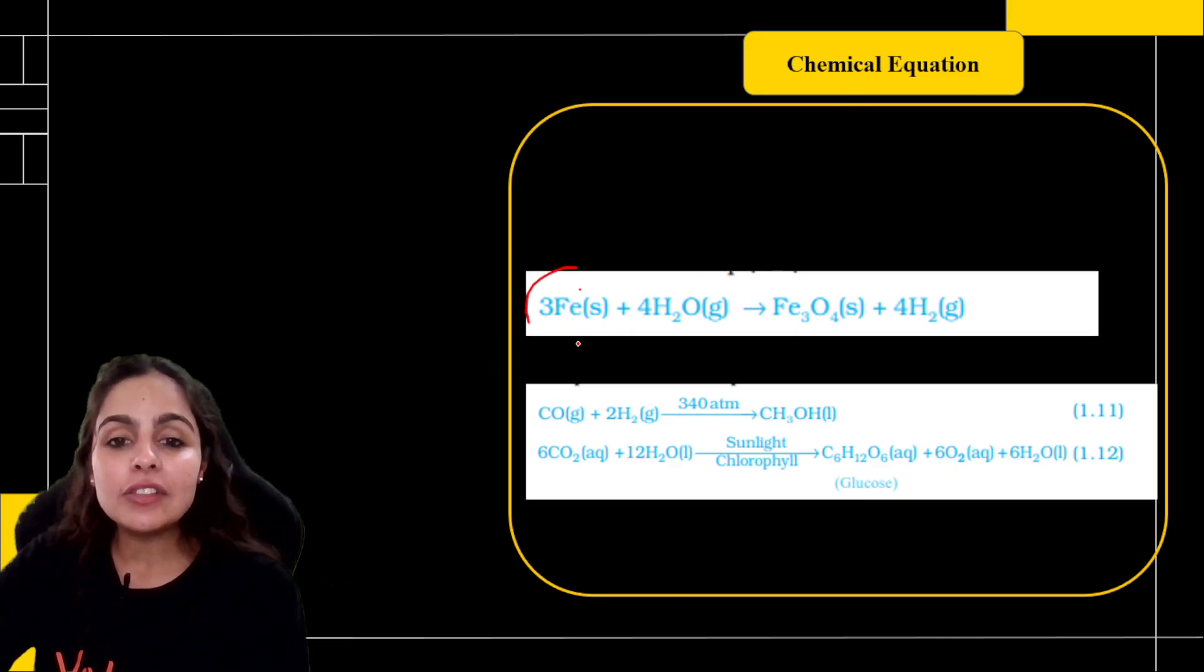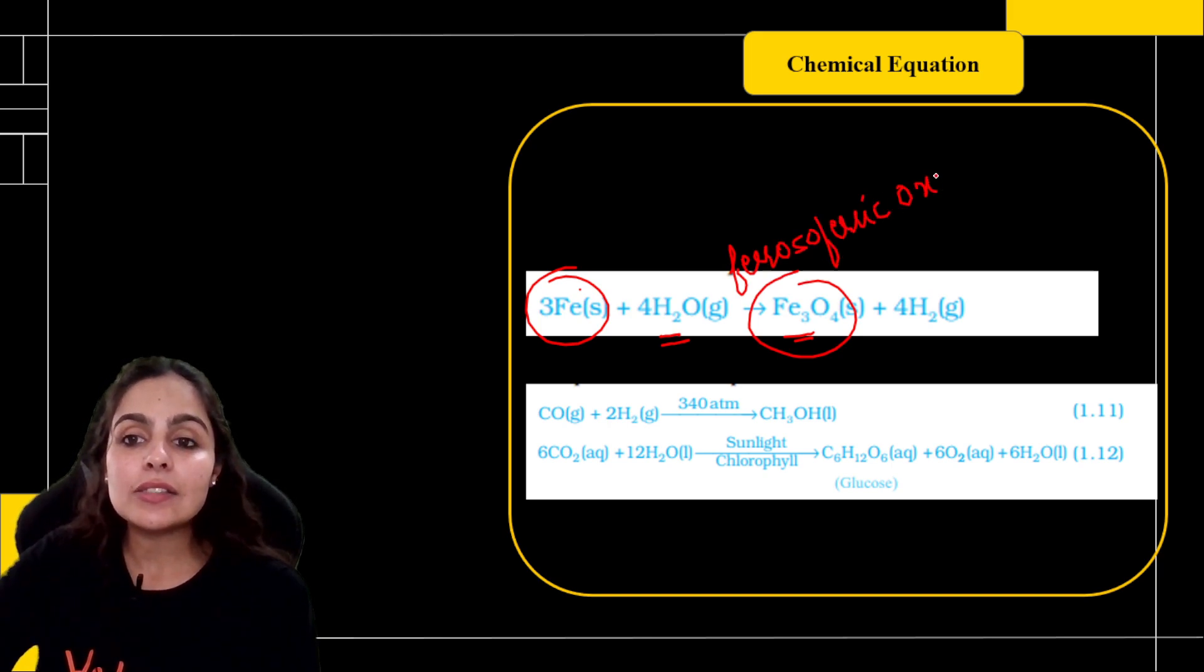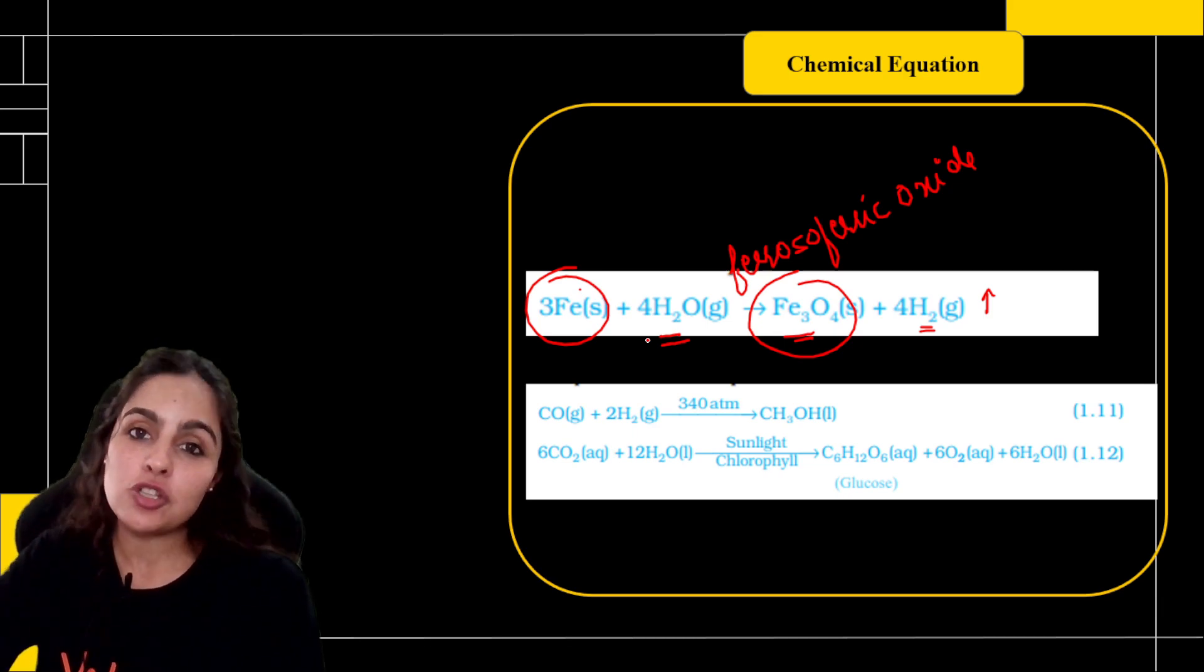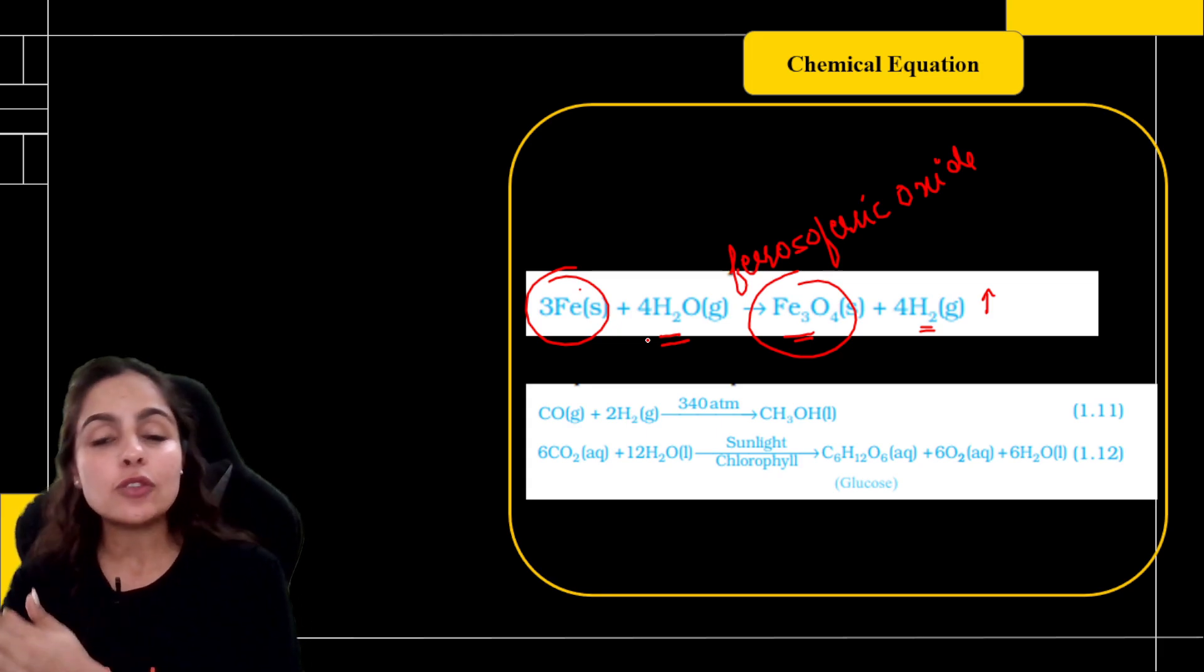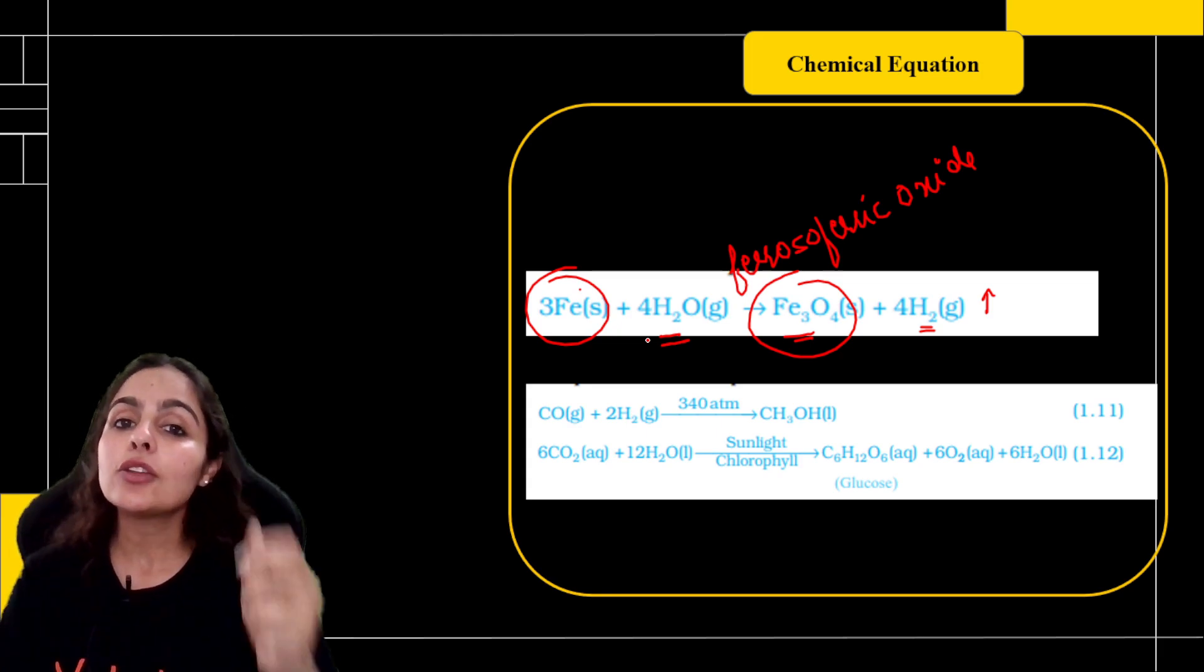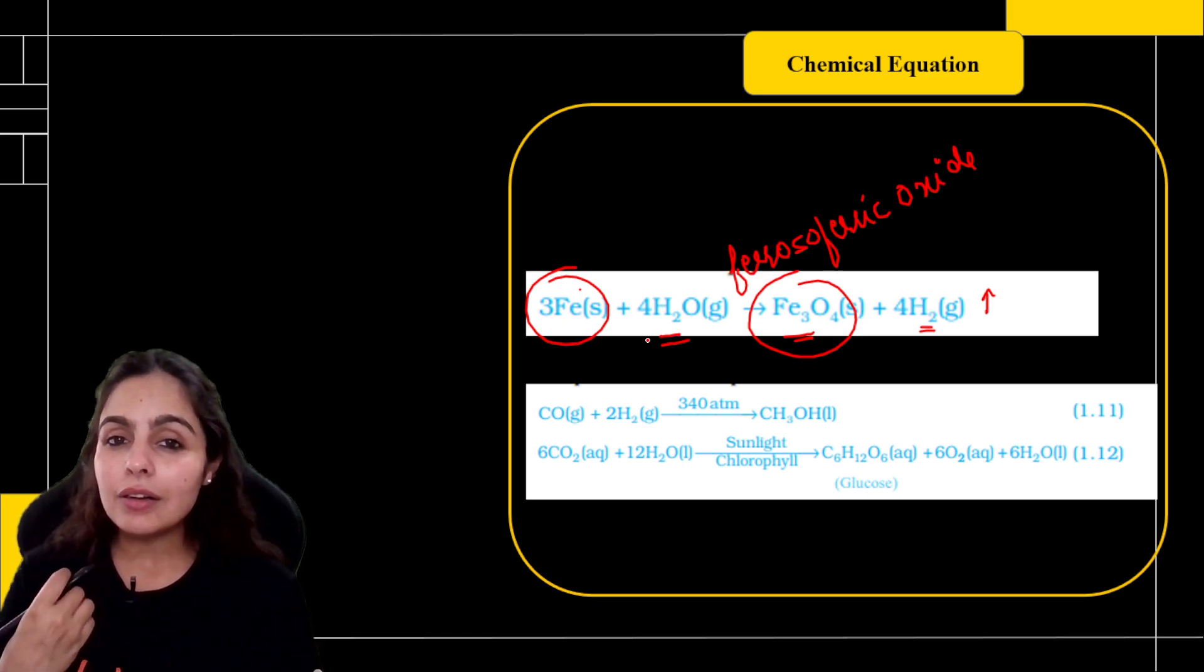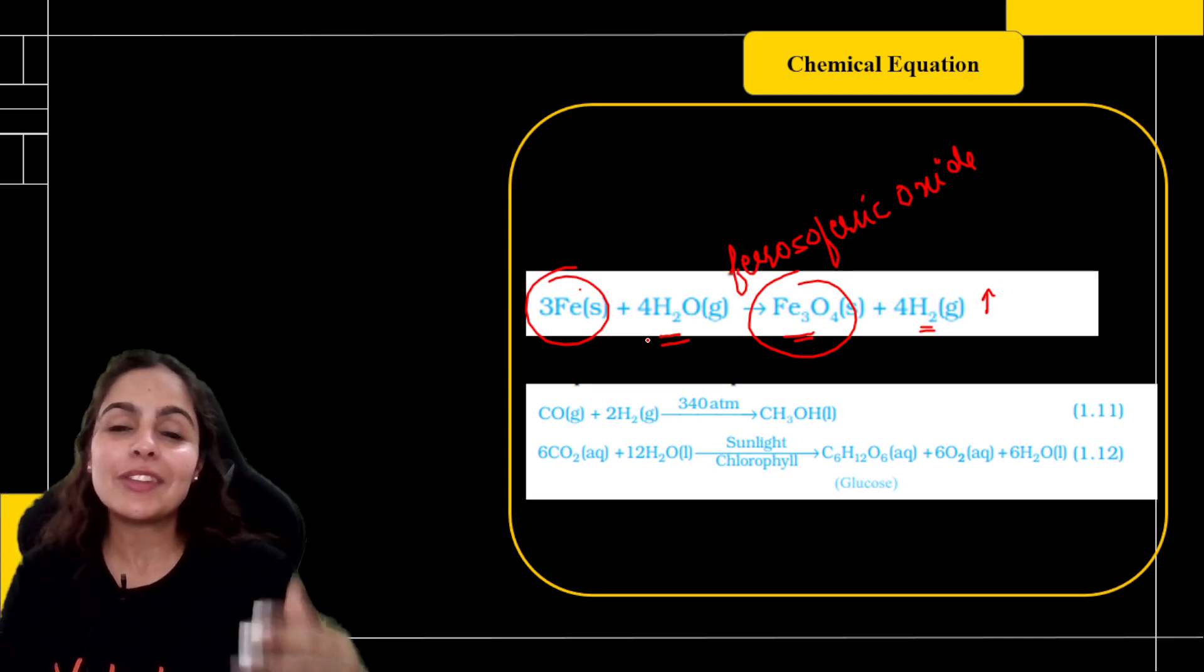For example, zinc reacting with H2SO4 forms zinc sulfate and hydrogen gas is produced. Next, starting up with iron. If you react metal with water, then ferrous ferric oxide is being created along with hydrogen gas. So if you look at it, the equation is balanced. Along with that, physical states are given that is providing extra information about this equation.